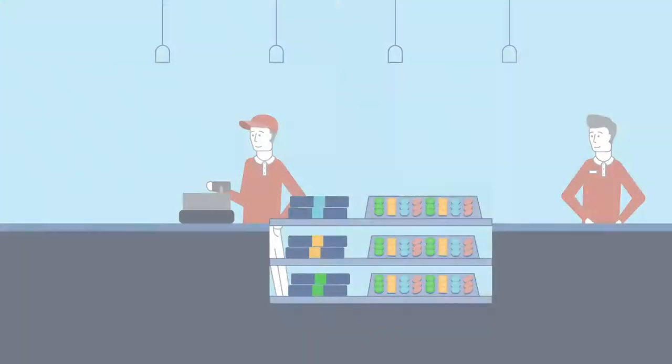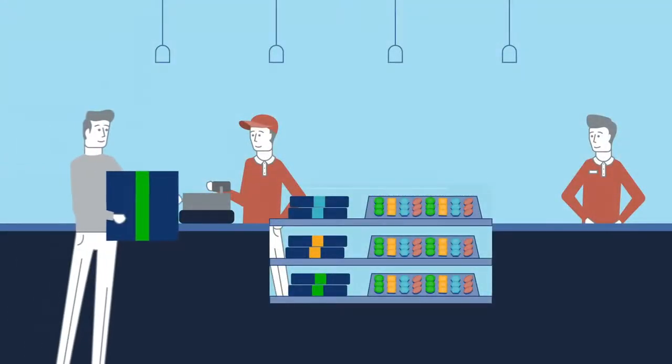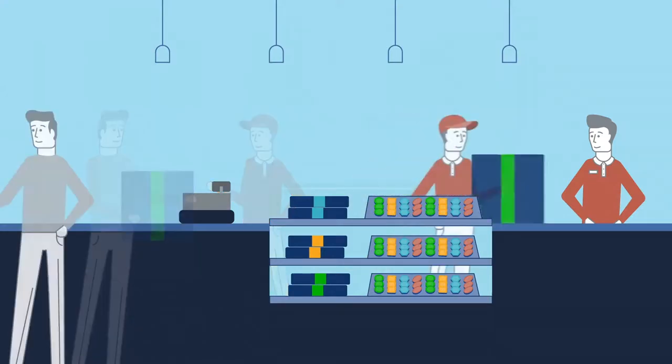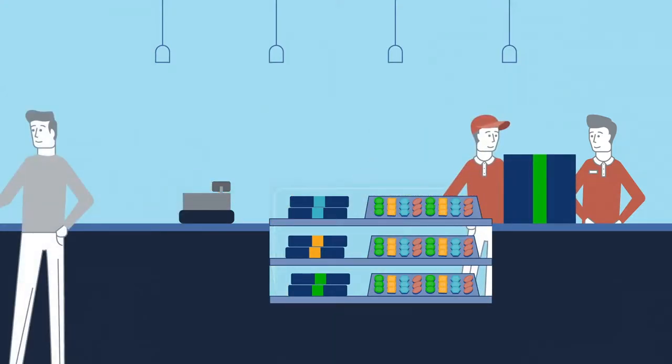Now what would happen if the investor had 20 boxes of chocolates and wanted to get rid of them? ETF redemption. The investor brings the boxes to the candy shop where the cashier buys them back. The cashier then brings them to the manager and asks if the store has enough in stock.